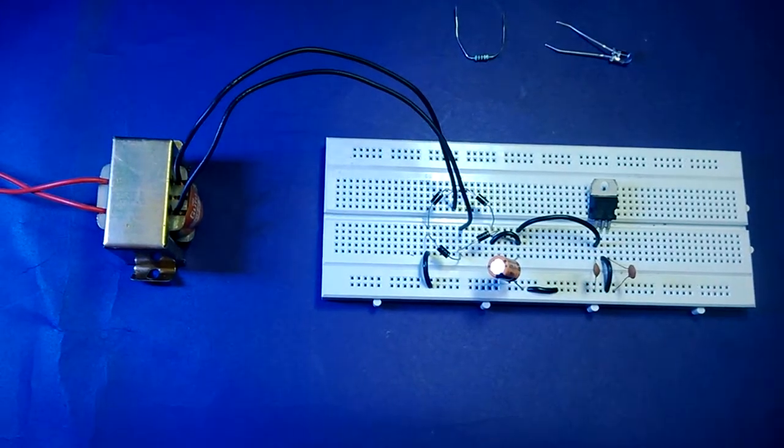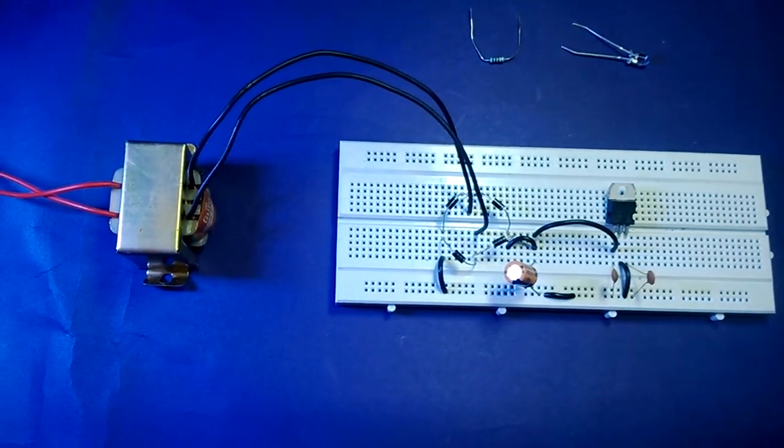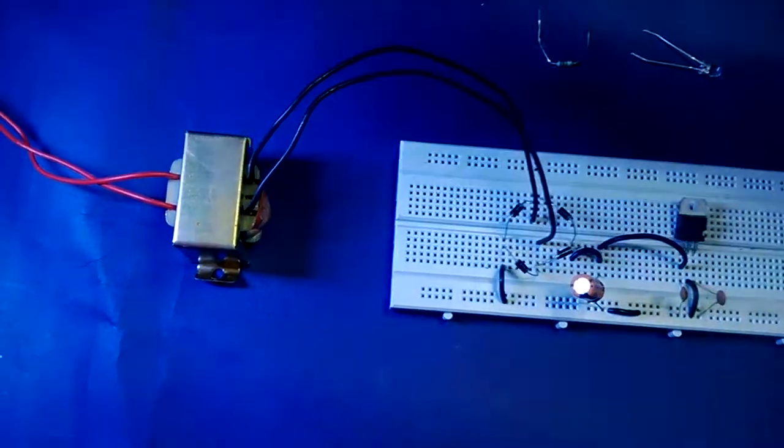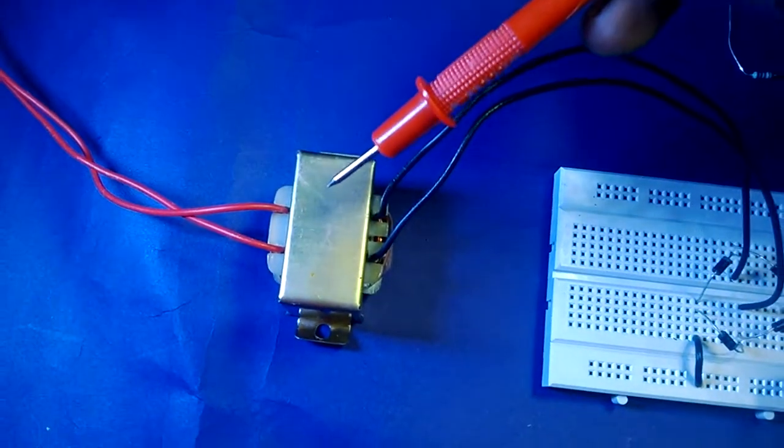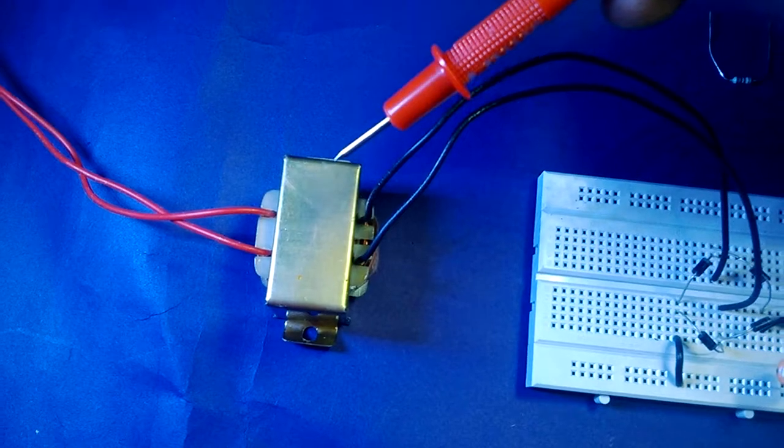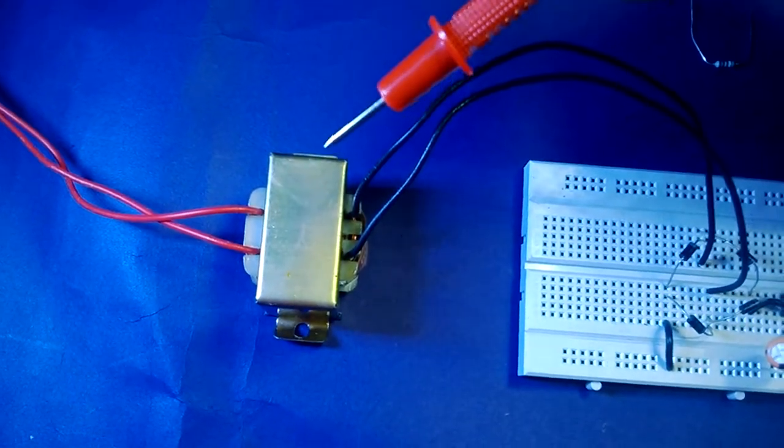First, we're connecting the circuit with a transformer. You can see and check it out - this is a transformer, which is a step-down transformer that converts 220-volt AC voltage into 9-volt AC voltage. This is the first section.